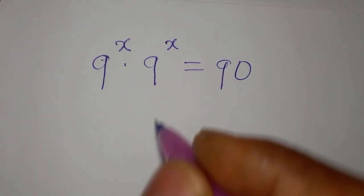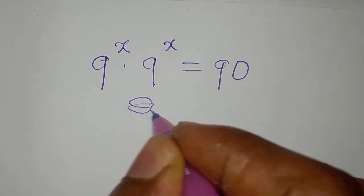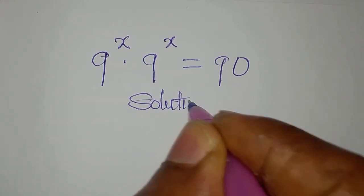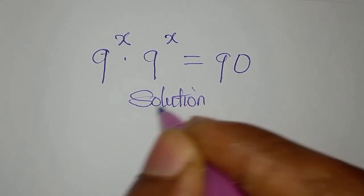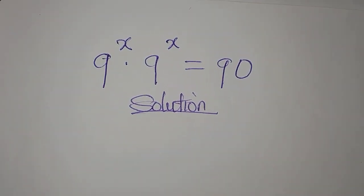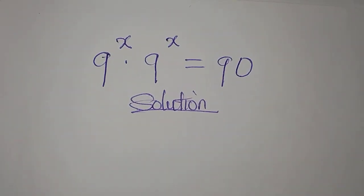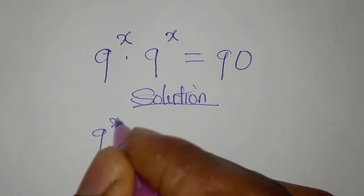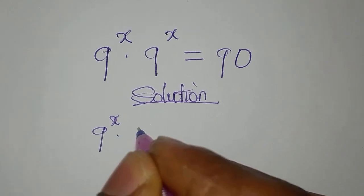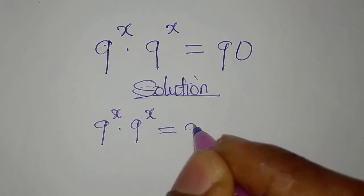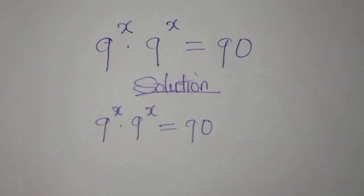Hello everyone. If you're ready, let's provide the solution to this olympiad mathematics problem: 9 to the power of x multiplied by 9 to the power of x equals 90.